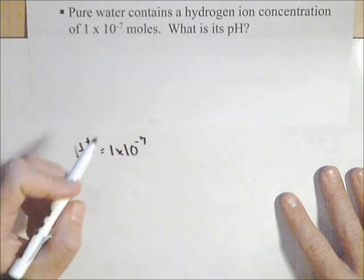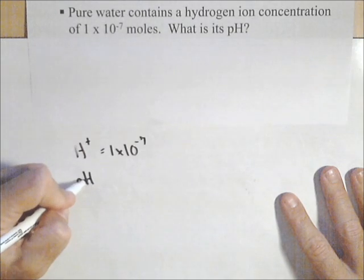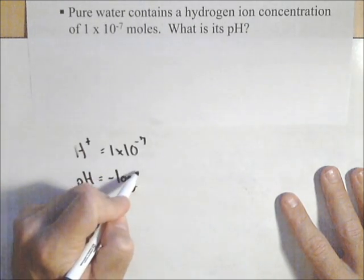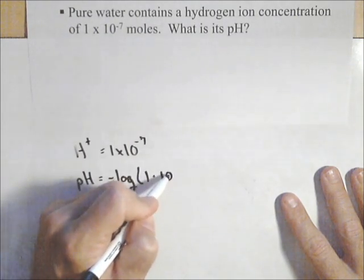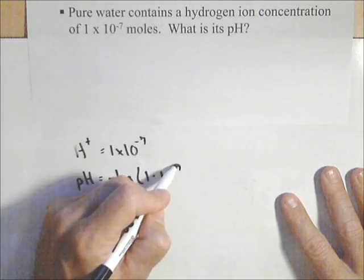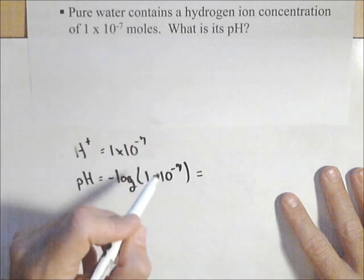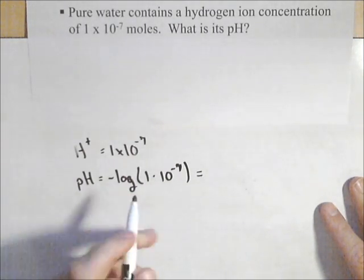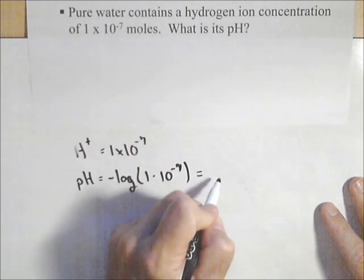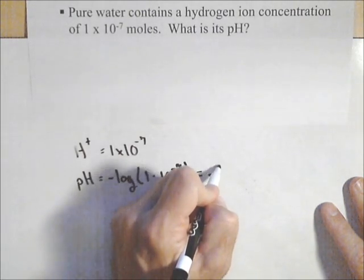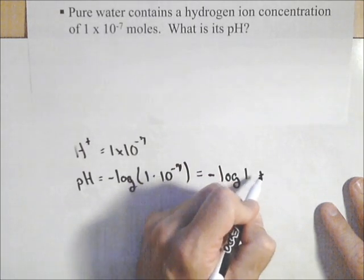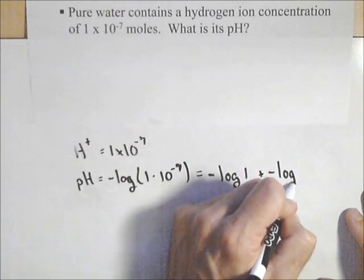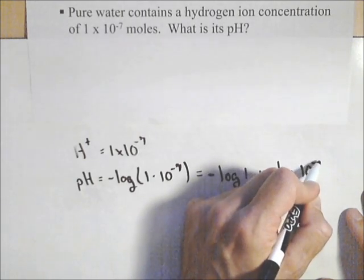And so, by using the formula, pH equals negative log. We can go ahead and put the whole thing in: 1 × 10^-7. Now 1 × 10^-7 is just 10^-7, but to show how we work with properties of logs, we have multiplication there, so it'd be -log(1) + (-log(10^-7)).